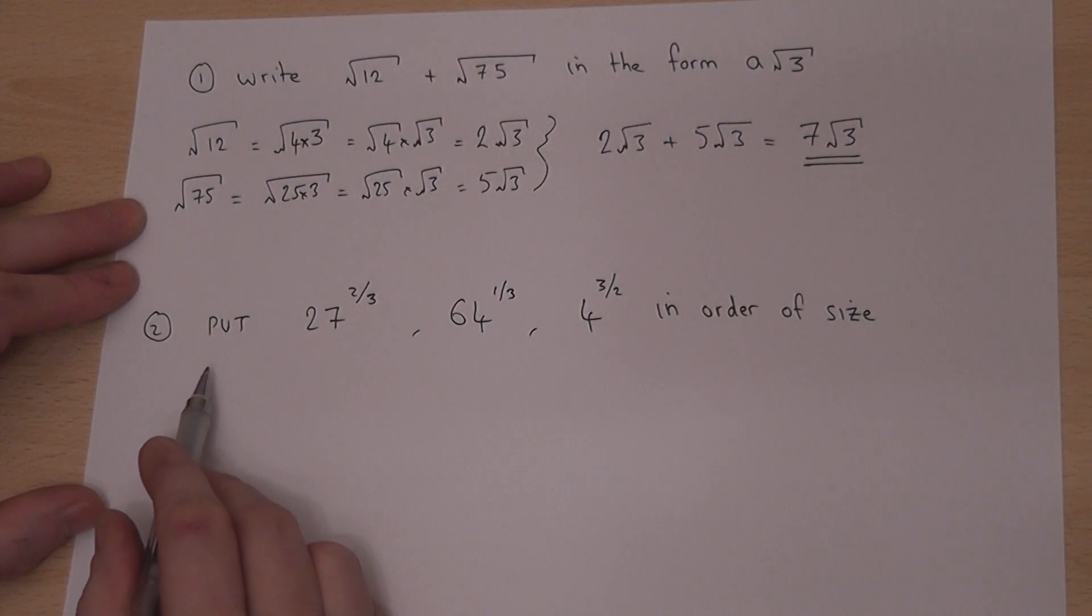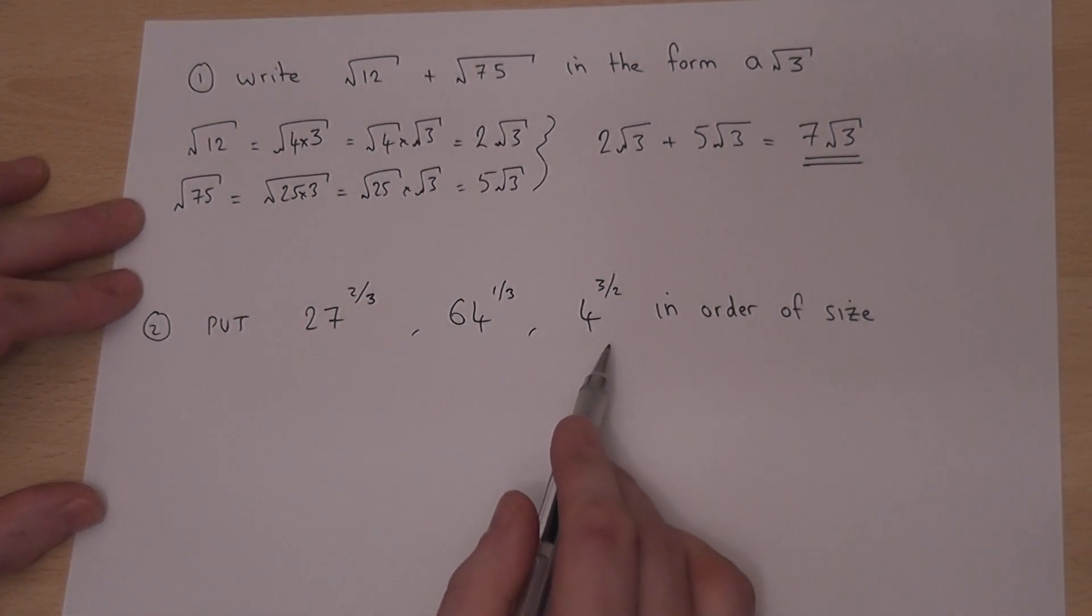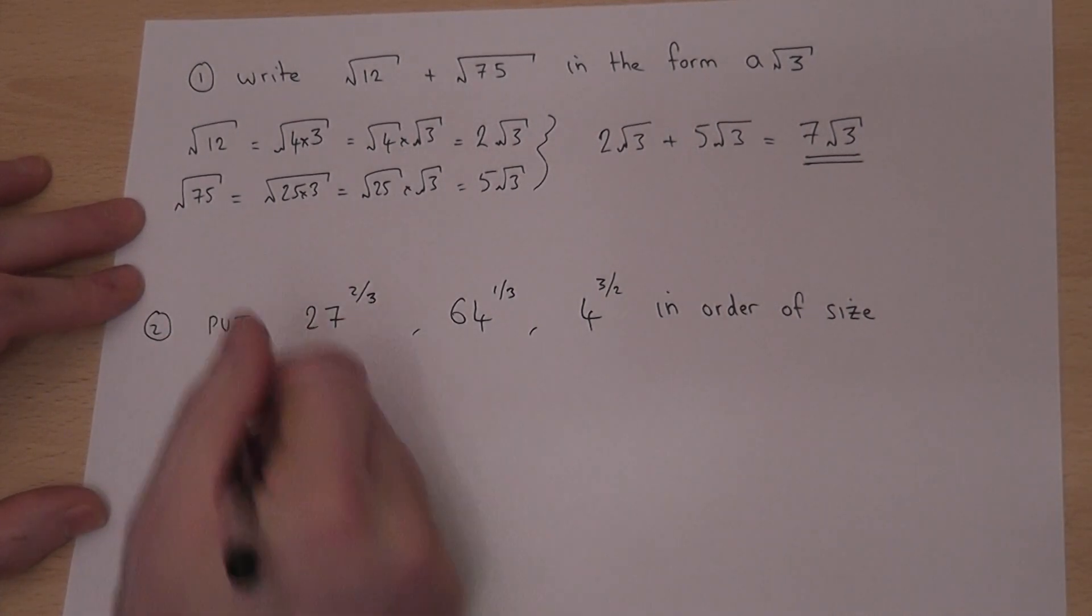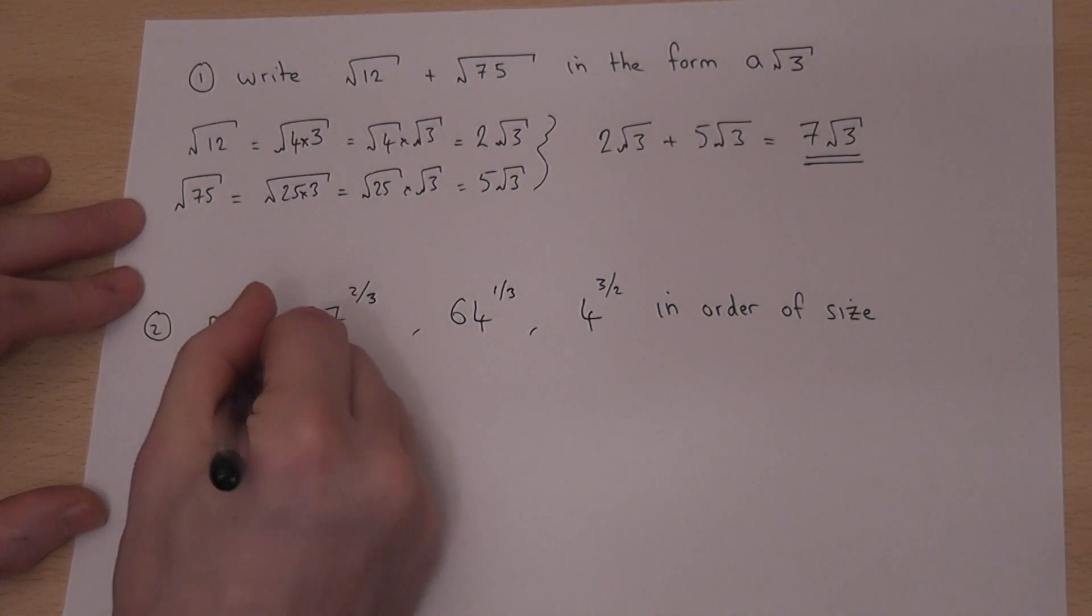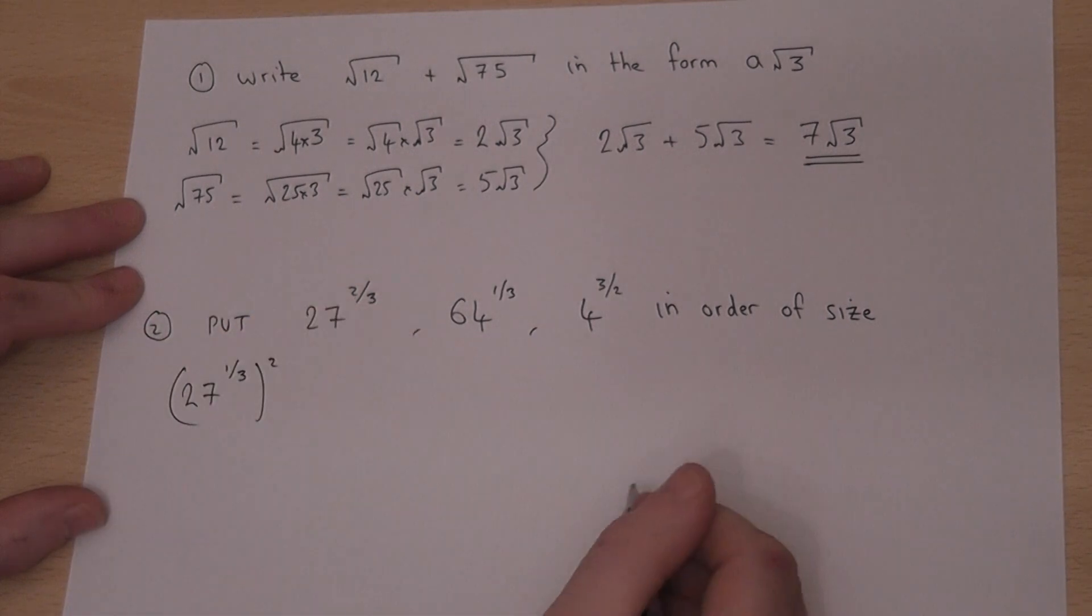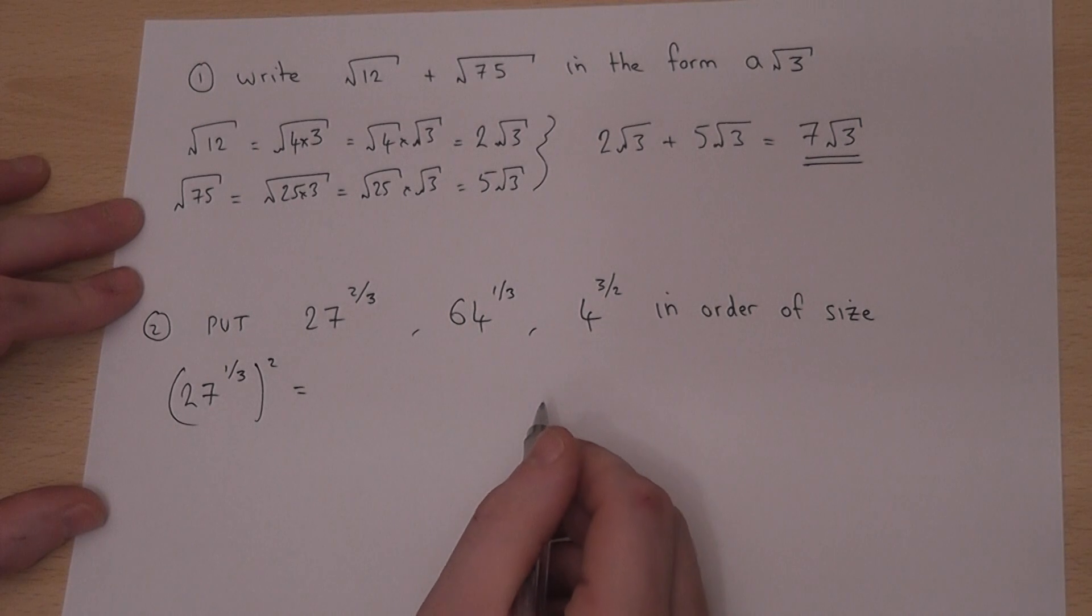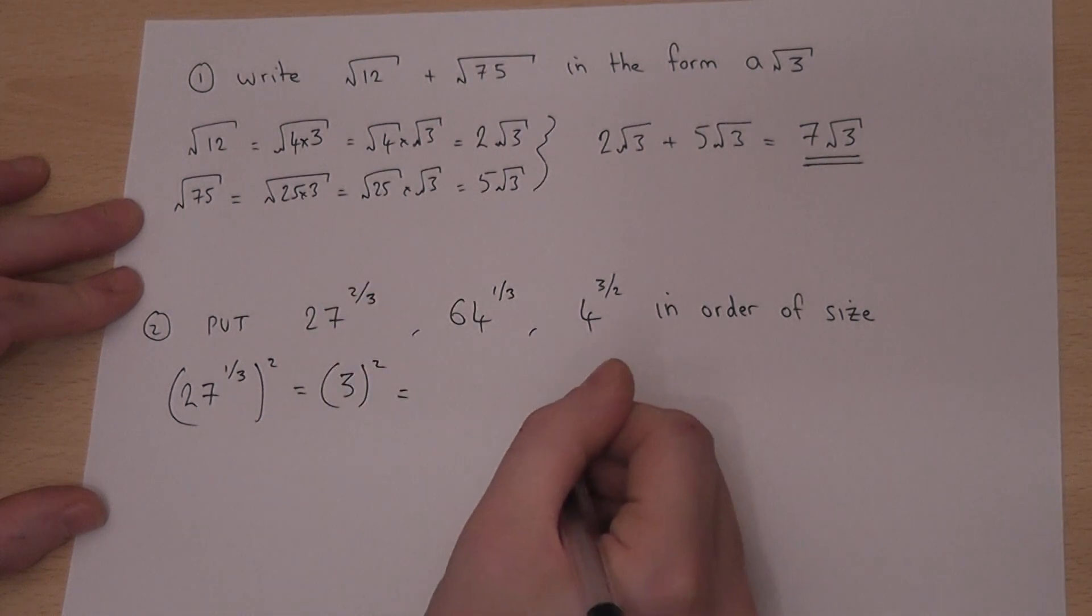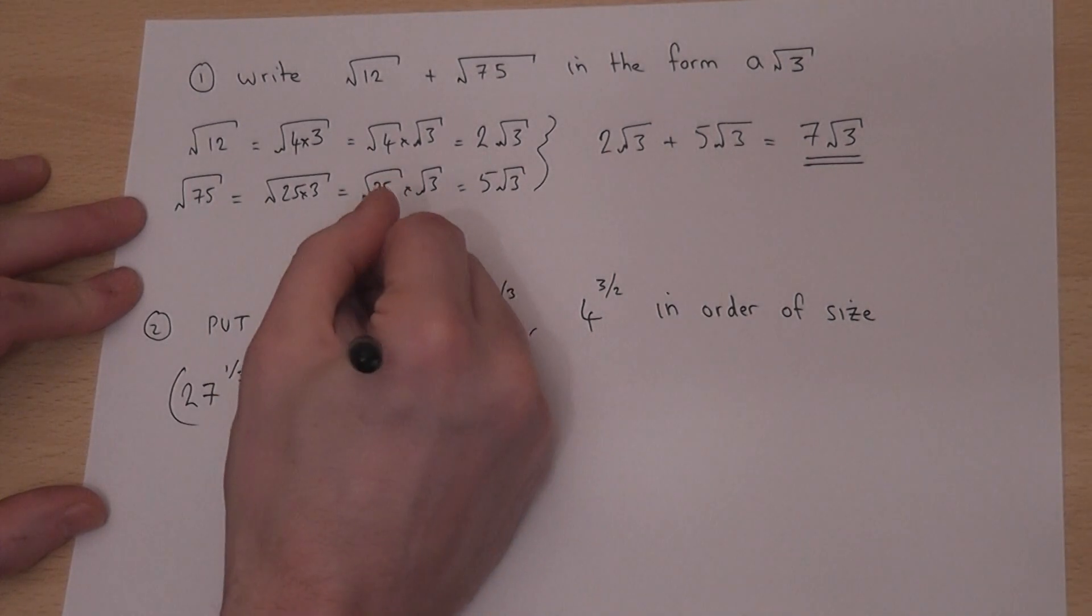The second question asks to put three numbers in order of size. These are fractional indices. Now 27 to the 2 thirds is the same as 27 to the 1 third, all squared. Now 1 third means the cube root. So what number cubed is 27? Well 3. So that's just 3 squared. And 3 squared equals 9. So this number here is equal to 9.